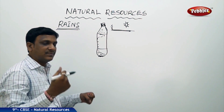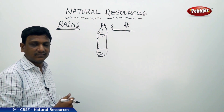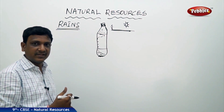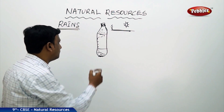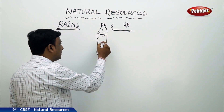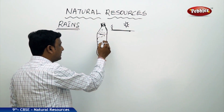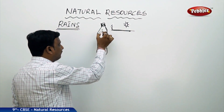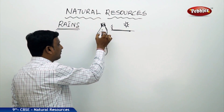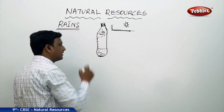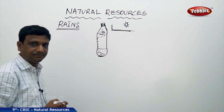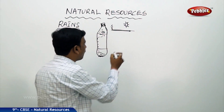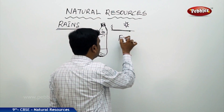Now crush the bottle as much as you can, then release it, and crush it again. What do you observe? The air containing the maximum amount of water vapour forms a cloud-like thing when smoke is introduced. This way you can demonstrate the formation of clouds.